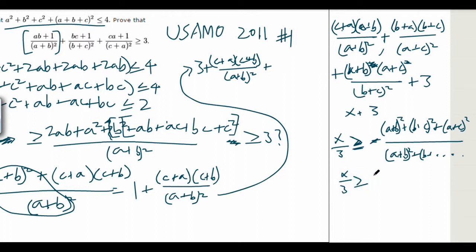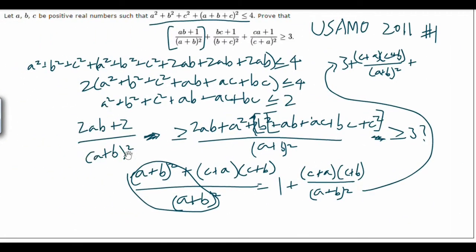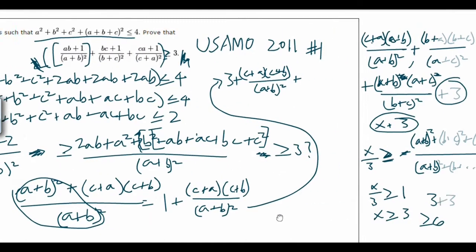So x over three is greater than or equal to 1, which means x is greater than or equal to 3. We found the minimum value. The minimum value of the entire expression is x plus three, and x is at least 3, so three plus three equals six. Thus this entire expression is greater than or equal to six. And remember, we multiplied by two earlier, so when we divide both sides by two, we get: A plus B plus 1 over A plus B squared plus B plus C plus 1 is greater than or equal to 3. We have proven it.